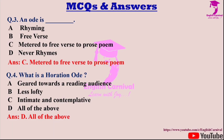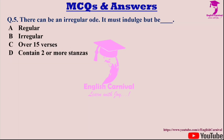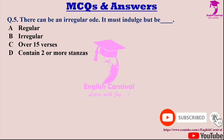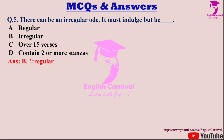Question five: There can be an irregular ode — it must indulge but be — dash. Options are A: Regular; B: Irregular; C: Over 15 verses; and D: Contain two or more stanzas. Correct answer is B — irregular.